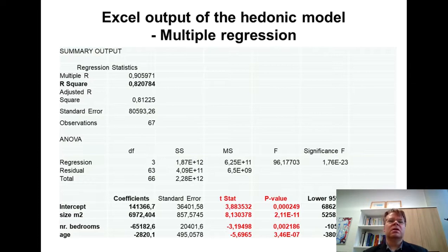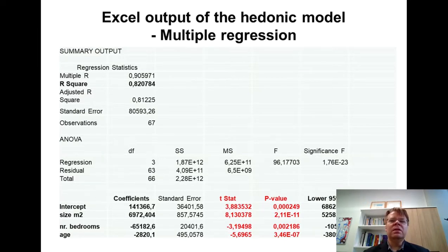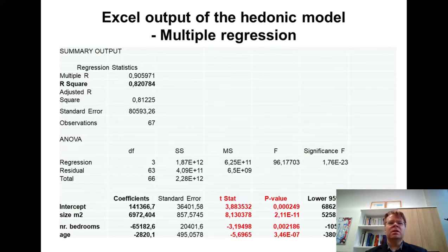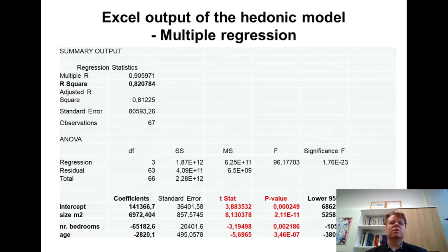In all of these cases, we can say that all explanatory variables are statistically significant at the 5% significance level. There is no reason to go to the statistical tables. Even at the 1% significance level, all of these p-values are smaller, so we can reject the null hypothesis even at 1% significance. In this particular example, the case is very clear: all of these variables have coefficients that are very far from zero, and standard errors are comparatively small, so all explanatory variables are highly significant.